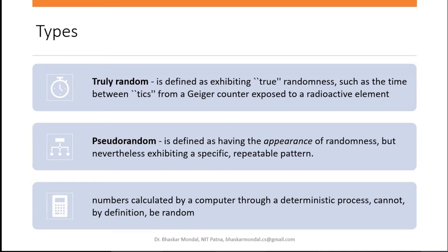Pseudo-random numbers are defined as having the appearance of randomness. When we look at a pseudo-random number sequence, it looks exactly random — if you don't know how it is generated or don't know the algorithm. But in cryptography, algorithms are public, so everybody will know the algorithm. Nevertheless, pseudo-random numbers exhibit a specific repeatable pattern. In a long sequence analysis — if you have a few hundred thousand bits and analyze them — you will find there is repetition of patterns. That is a problem, and reducing these repeating patterns is a challenge in random number generation.